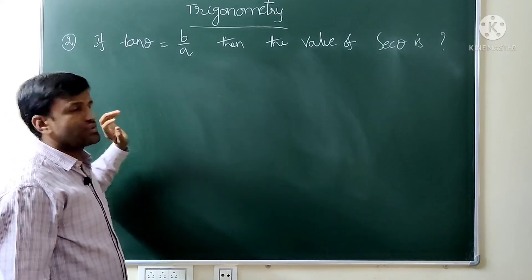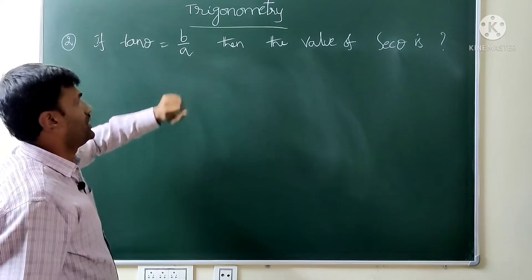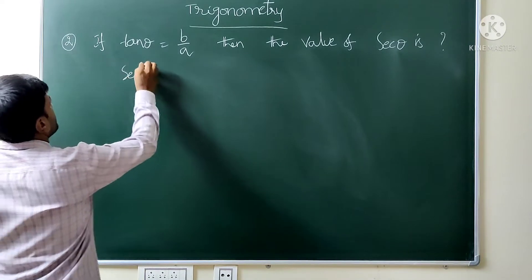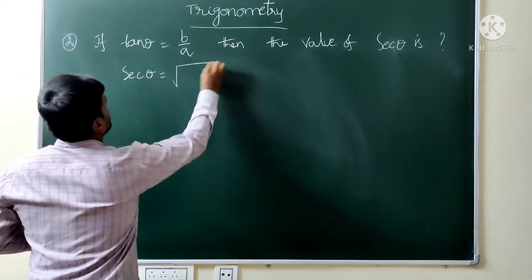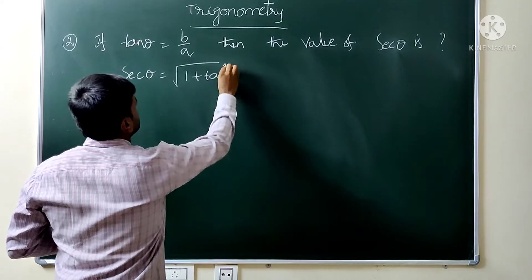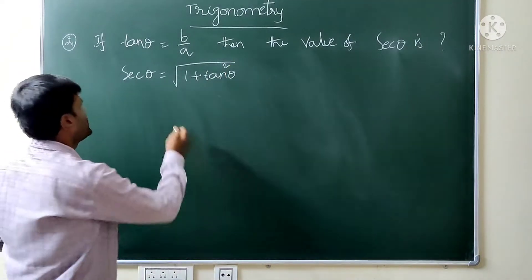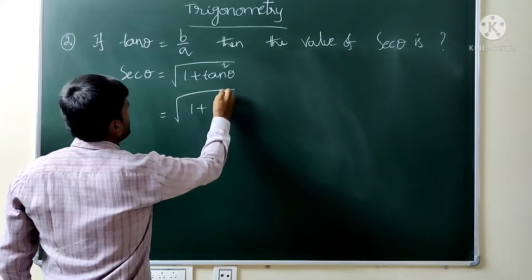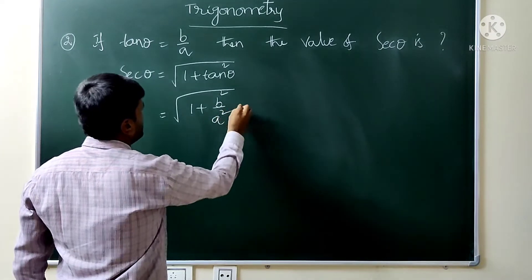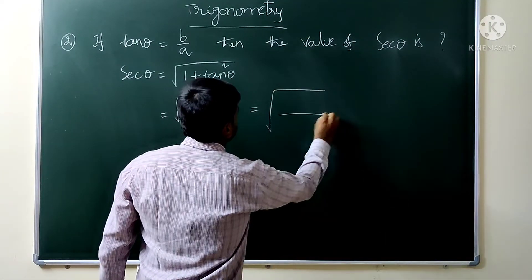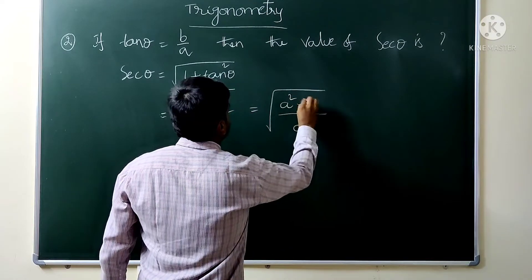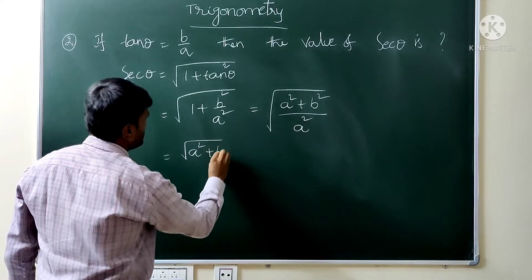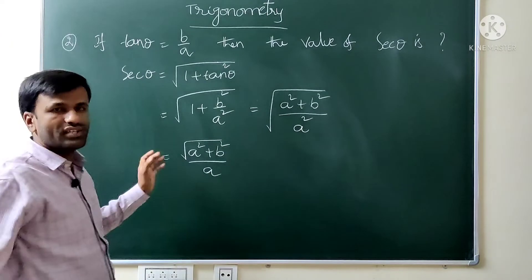Second question: if tan θ equals b by a, then the value of sec θ is? Sec θ equals root of 1 plus tan² θ. Apply to get root of 1 plus b² by a², which gives root of (a² + b²) by a². This is the value of sec θ.